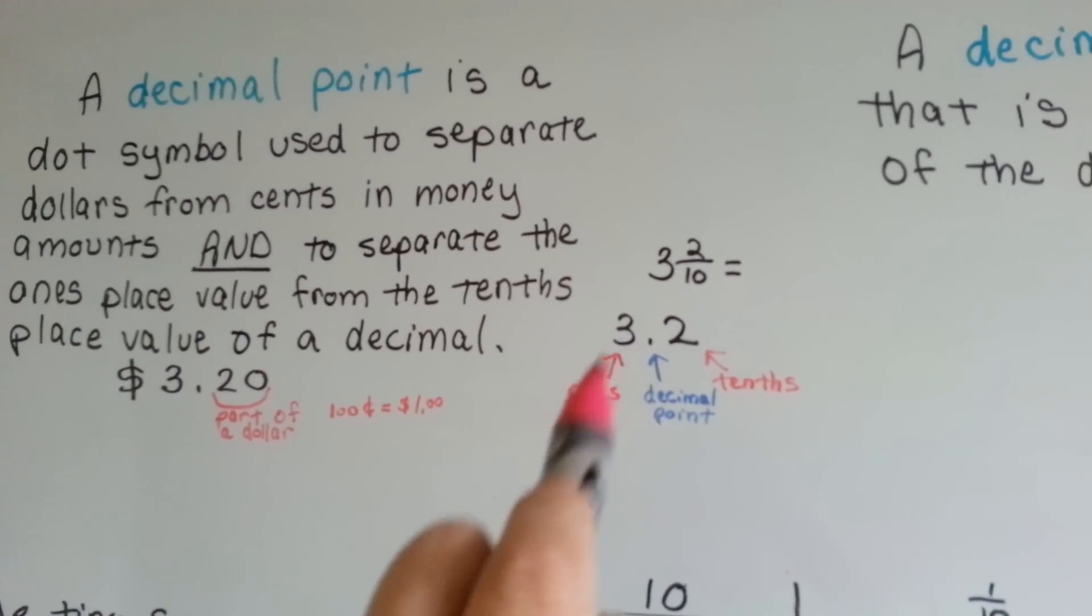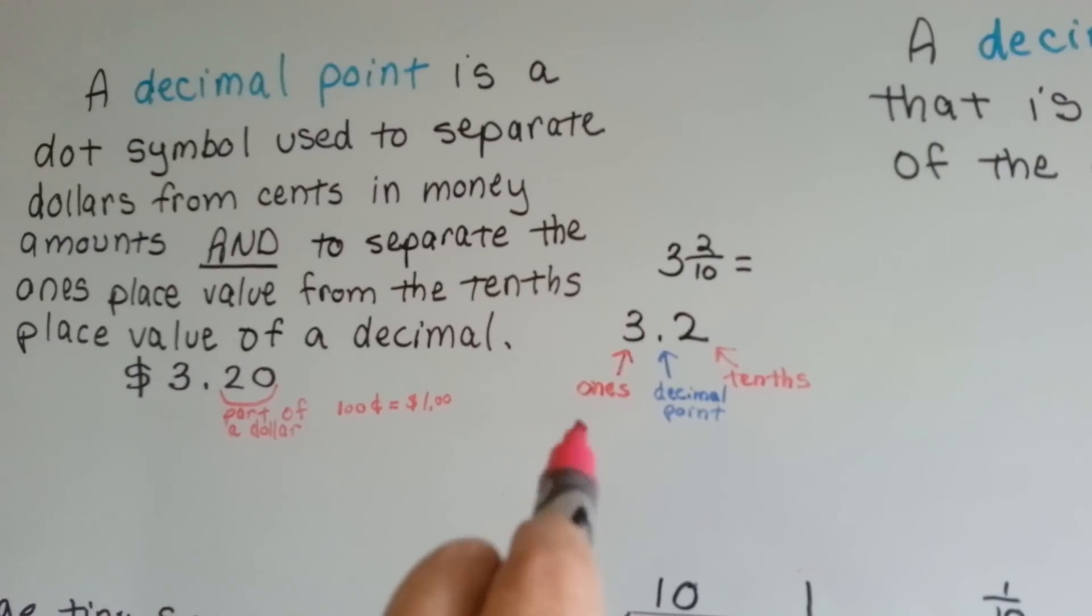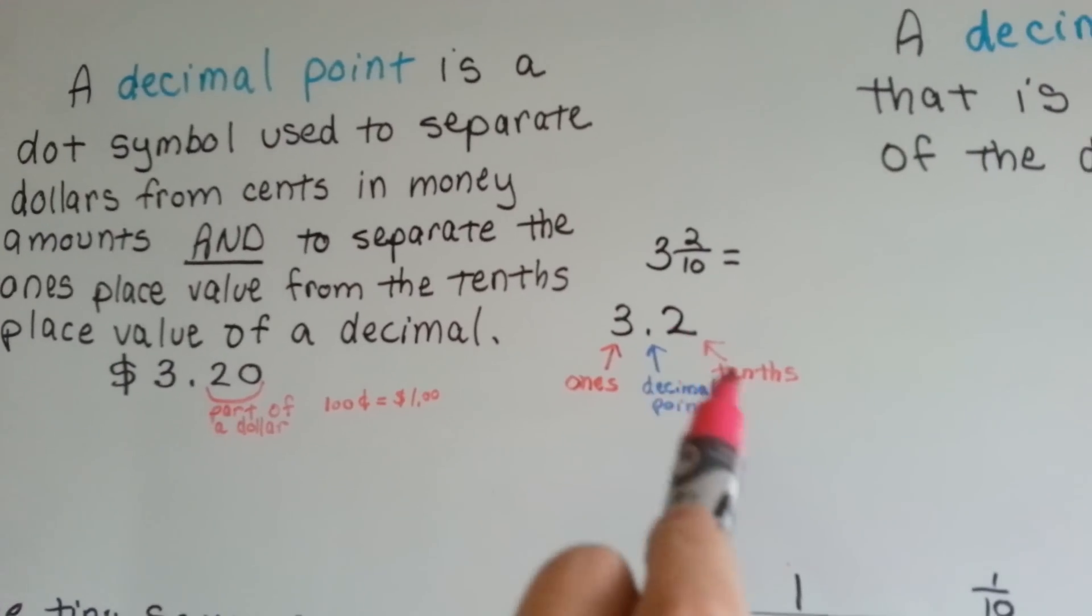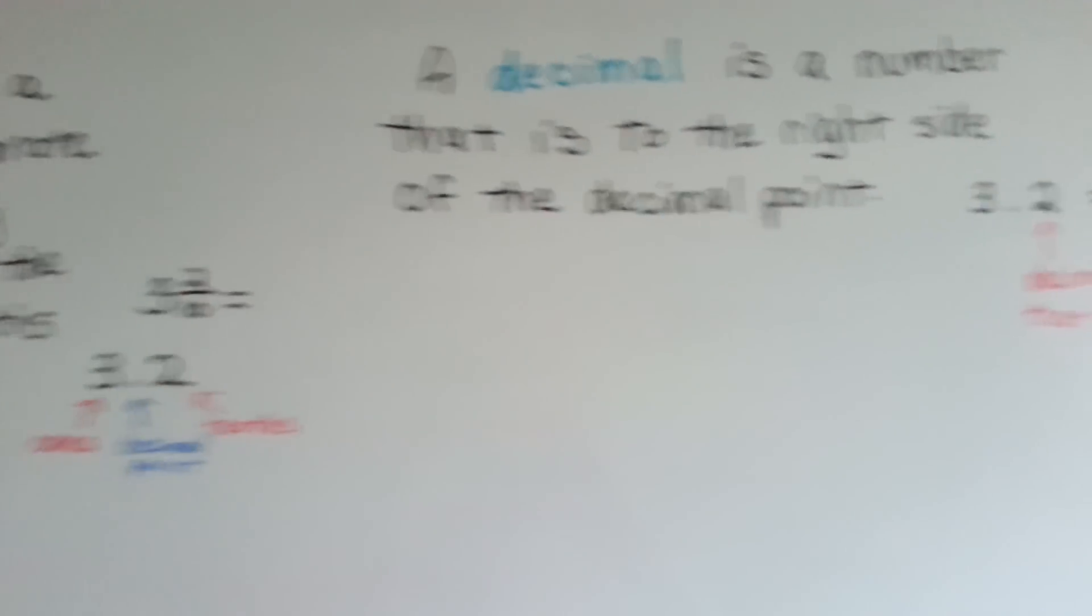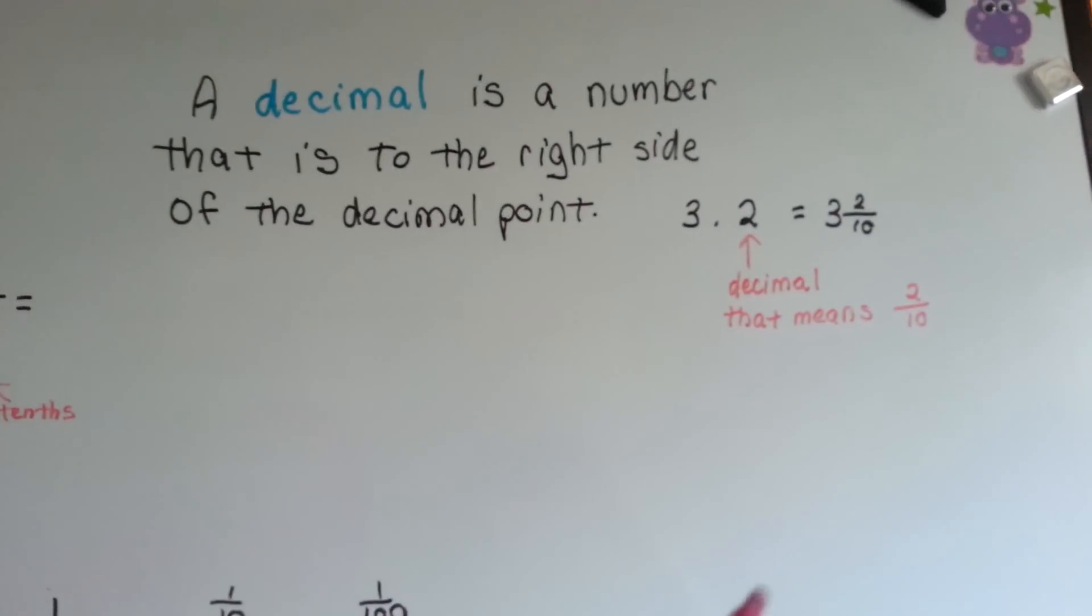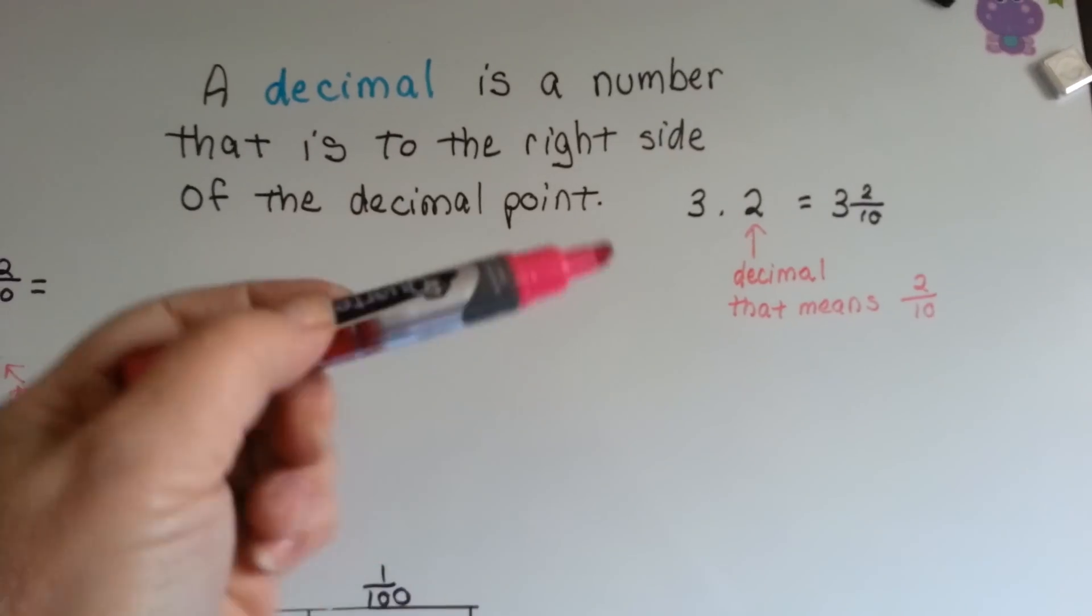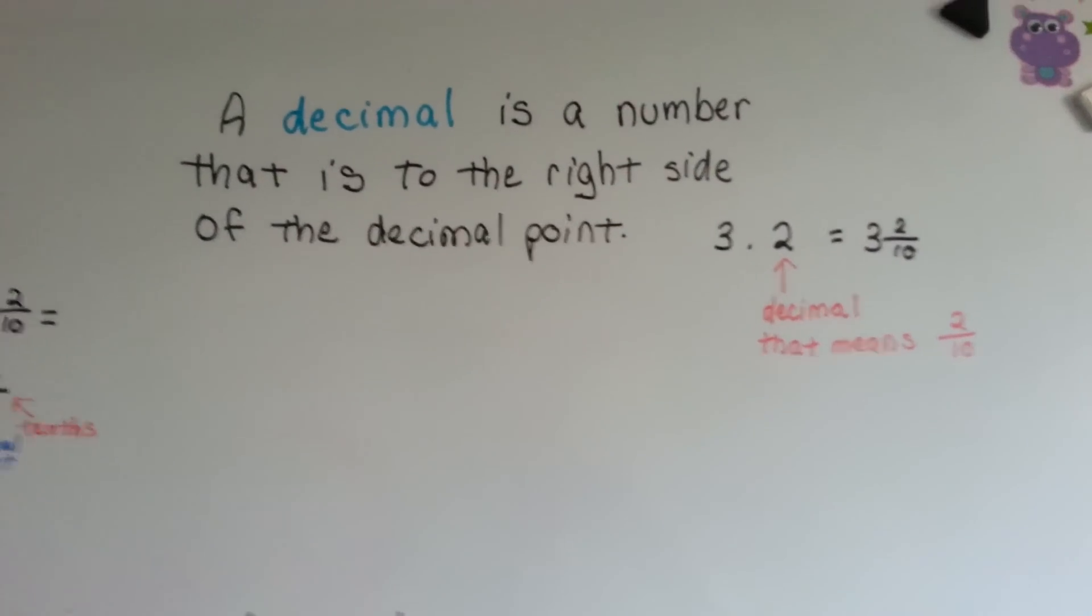This is whole numbers, it's the ones place, and to the right of the decimal point is the tenths place. So a decimal is a number that is to the right of the decimal point.